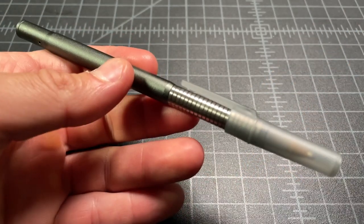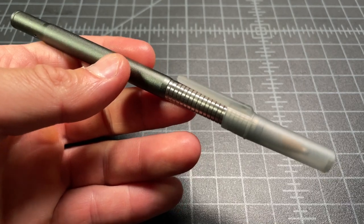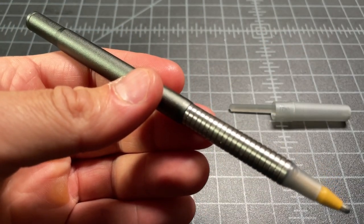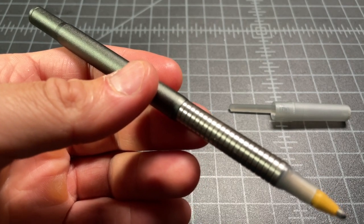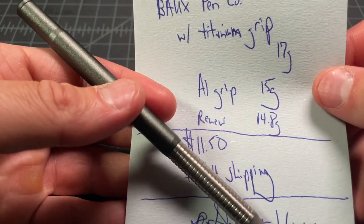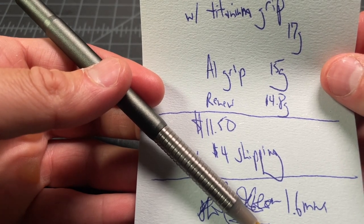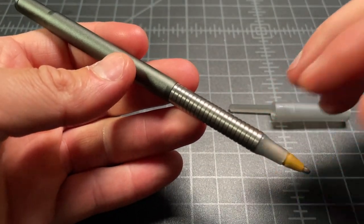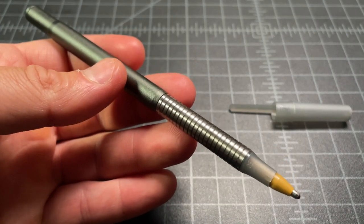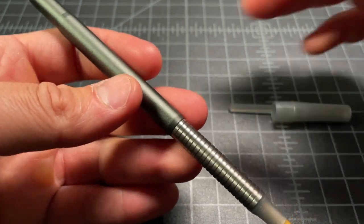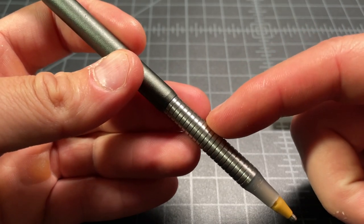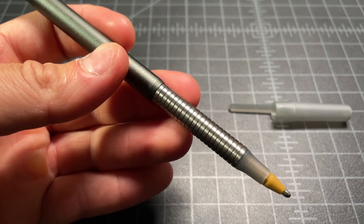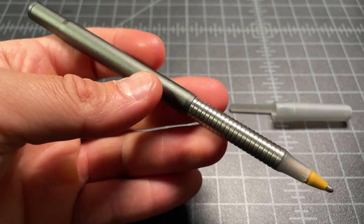These pens sell for, I wrote it down, eleven dollars and fifty cents. It's about four dollars or so for shipping, though shipping is probably going to vary based on where you are. The pen entry level price is about nine dollars for full aluminum, but if you upgrade to the titanium grip it goes to eleven dollars or something like that. Basically expect to spend about fifteen dollars on these pens.